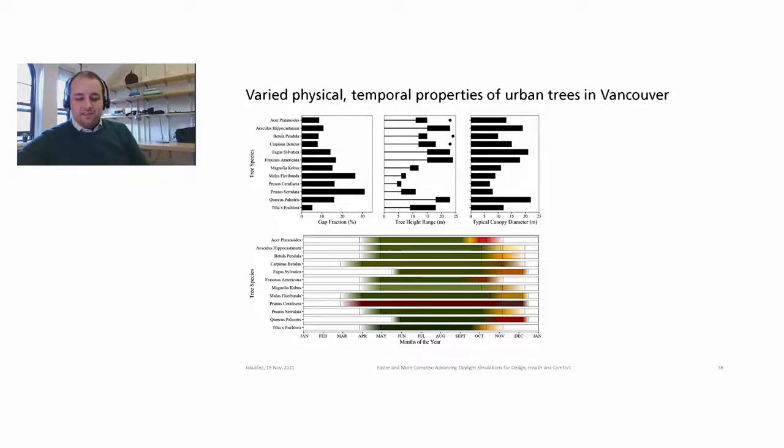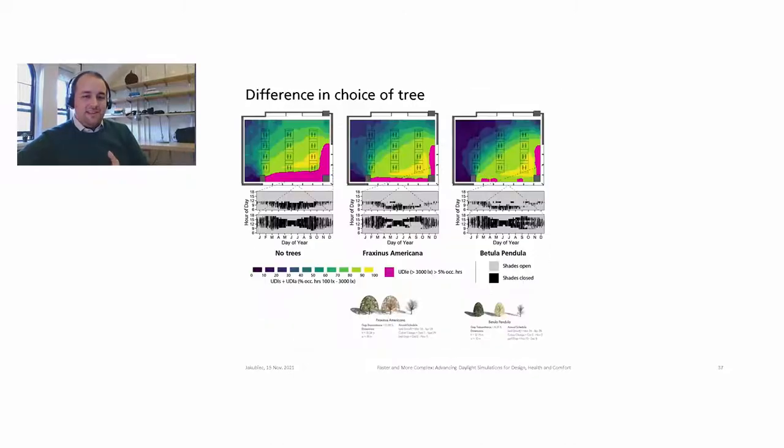And once you start putting these in front of a building, you can get some pretty interesting and striking differences. So in this case, I'm just comparing three results, and the left-hand side is no trees, the middle side is our best-performing tree in this simulation model, the Fraxinus americana, and the right-hand side is another dynamic deciduous tree, the Betula pendula. So we get differences in usable daylight of up to 15% between these models, and differences in the number of hours that blinds are closed by 350 hours in some cases. So they can really have strong impacts, not only on daylight, but also on view.